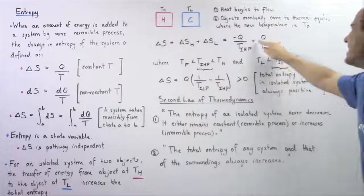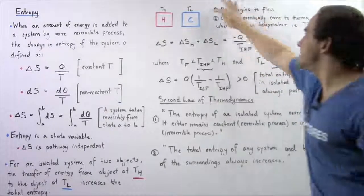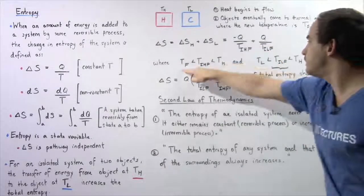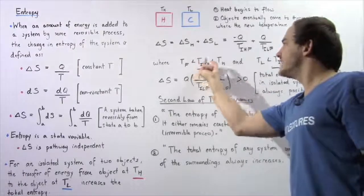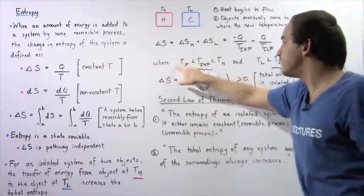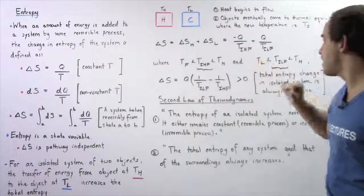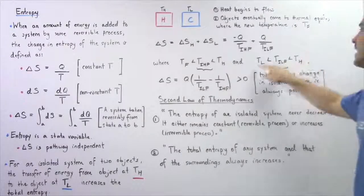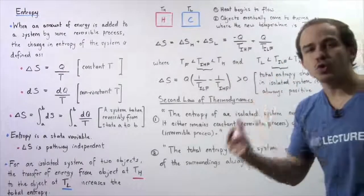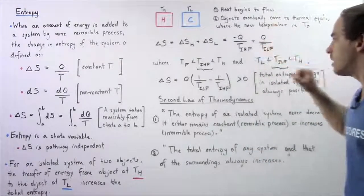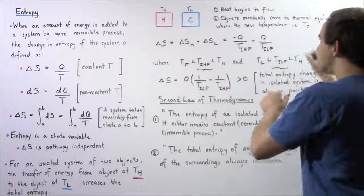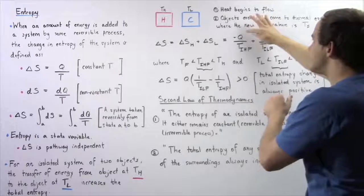The intermediate temperature for this object lies between TL and the final temperature TF. So our ranges are: the intermediate temperature for the hotter object lies between TF and TH, while the intermediate temperature for the cooler object lies between TH and TL. Notice this quantity — the denominator for the hotter object — is greater than the other. This will become important in just a moment. Let's rearrange this equation and factor out the common term Q.